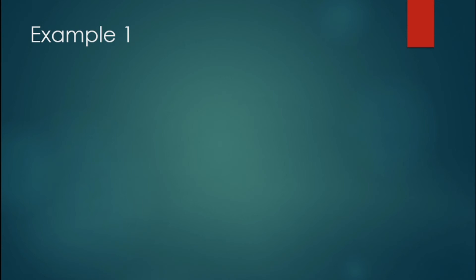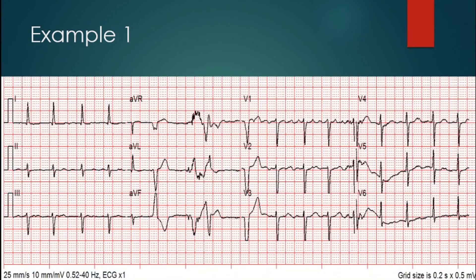Now let's look at the first example. Look at V1 — you see all that atrial activity right there? Those are your hidden flutter waves. The rate you can see here is around 300 beats per minute. If you look at the rest of the 12-lead, you won't really see any perfect flutter waves anywhere.